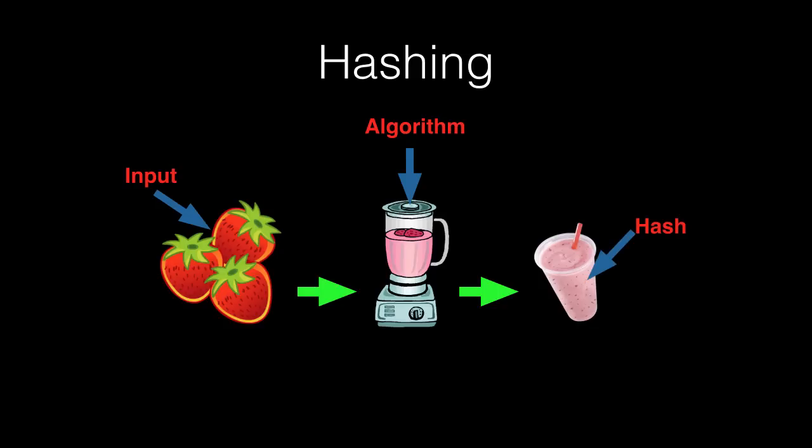Now, you can never get the original strawberries back, right? It's a smoothie. Same in hashing. You'll never be able to turn the crazy numbers and letters back into your original input.